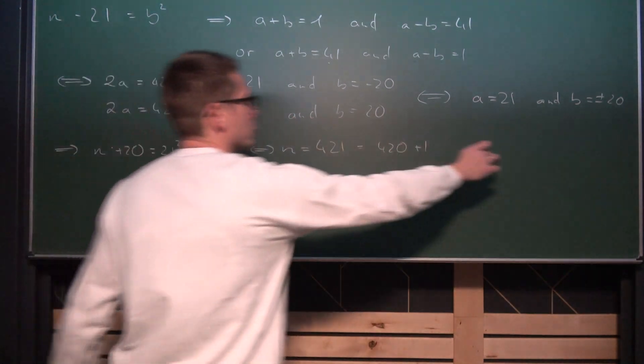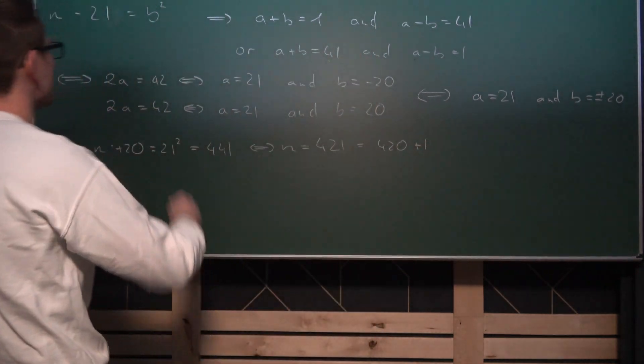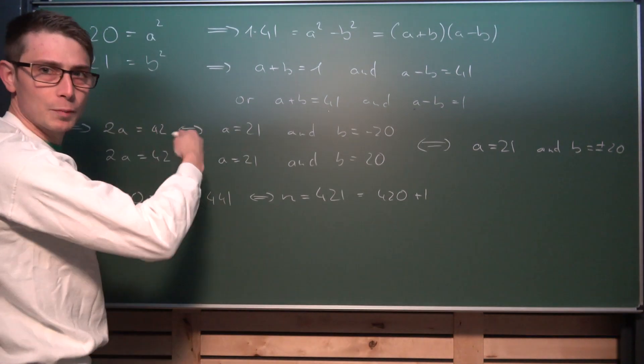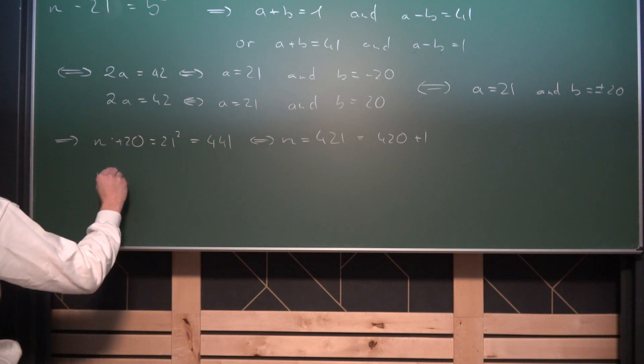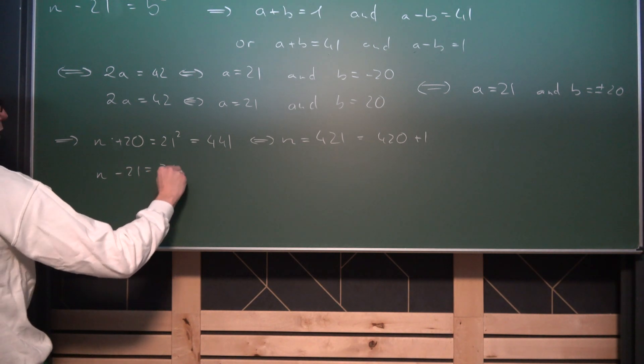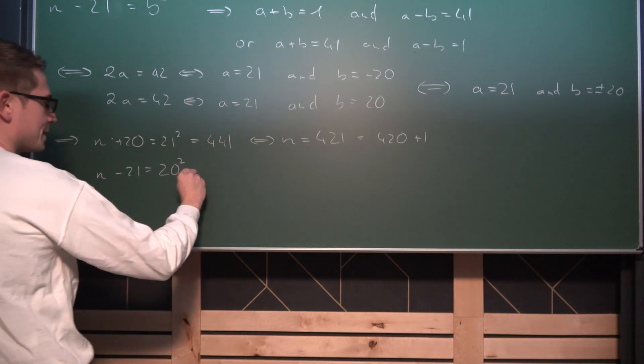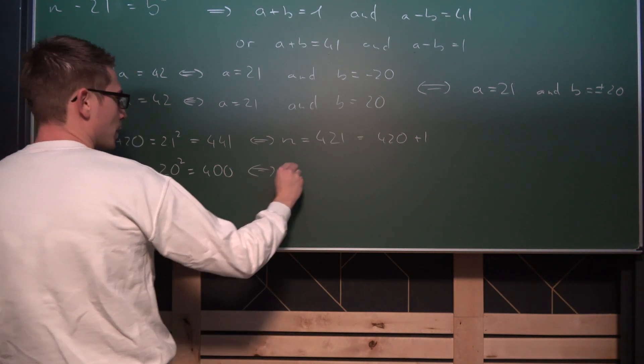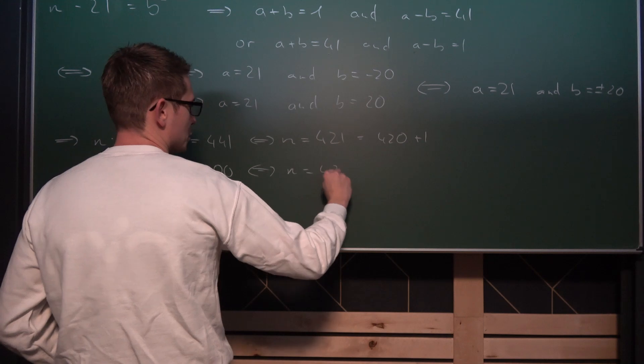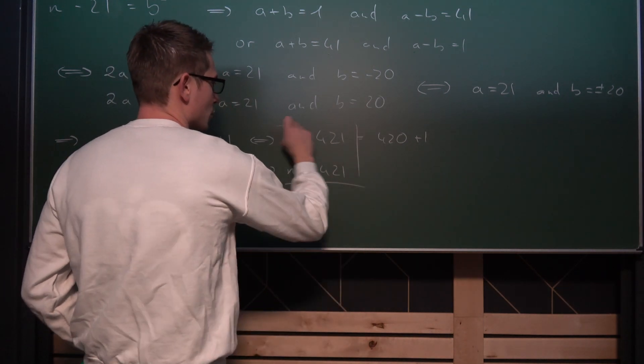Let us also check with the other one. If we plug B being equal to plus minus 20 in here, as mentioned before, the plus minus is going to get cancelled out under applying the square. We are going to get that N minus 21 equals 20 squared. 20 squared is the same as 400, and if we add 21 on both sides we get that N equals 421, and hence we are done.